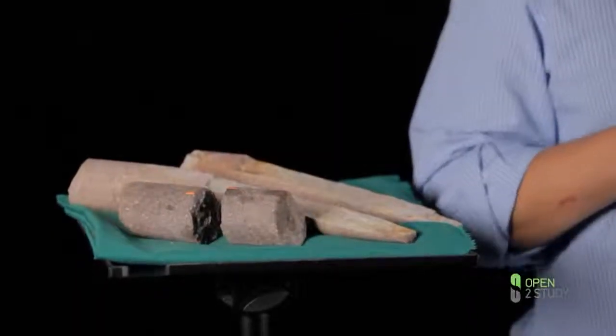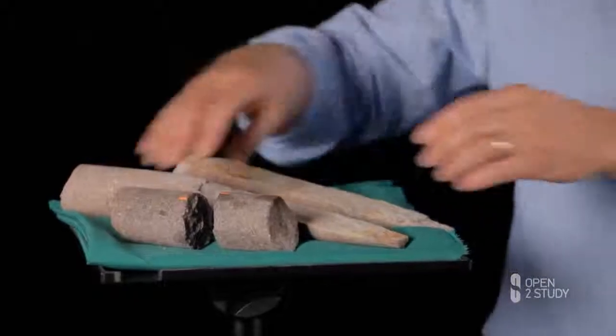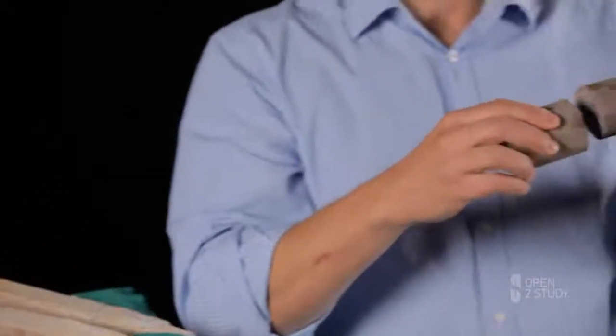Unlike for the intact rock, the mechanics of a rock joint is that of a contact between two rock walls.